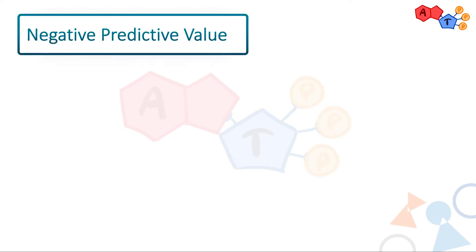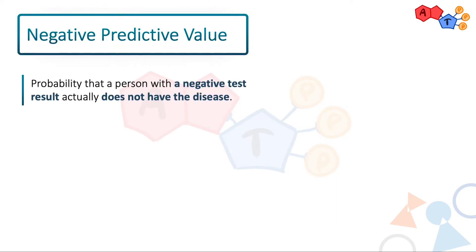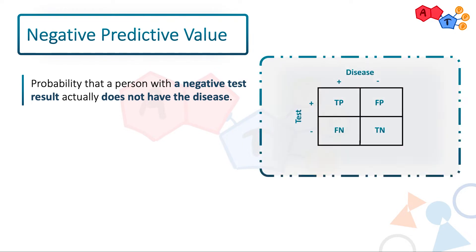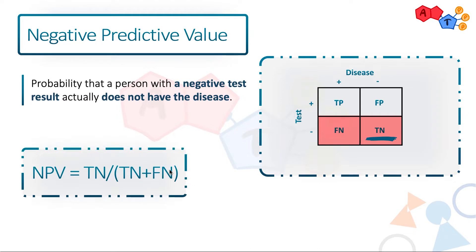Negative predictive value, by definition, is the probability that a person with a negative test result actually does not have the disease. So people with a negative test result — we're only interested in those without the disease. So it's true negatives over all negatives: true negatives plus false negatives. The way to remember the formula is just to remember all the negatives.